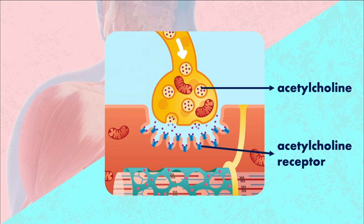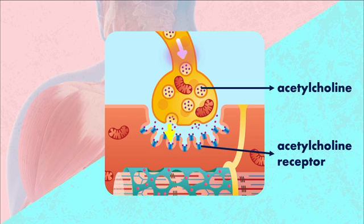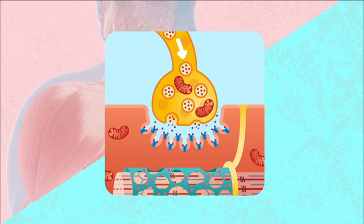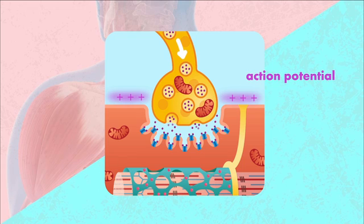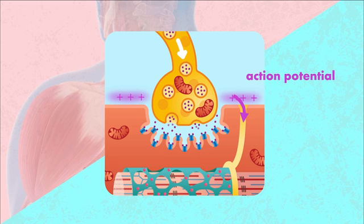Once the signal comes, the motor neuron releases the neurotransmitter acetylcholine. This is a very important neurotransmitter when it comes to muscle contraction. Once the acetylcholine binds to the receptors on the muscle fiber, that will cause the sodium channels to open. When those channels open, positively charged sodium ions rush into the muscle cell membrane, causing a signal known as an action potential in the membrane of the cell. Now we have a signal in the muscle cell membrane that spreads throughout the membrane, and it doesn't just stay superficial — the membrane actually folds in and extends deep into the muscle via structures called T-tubules.